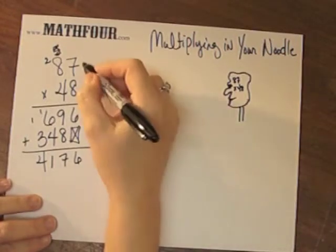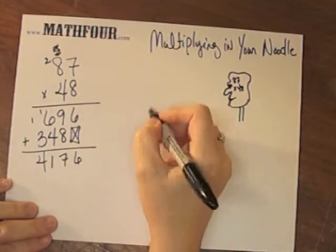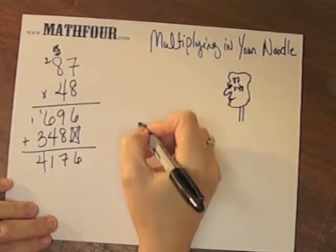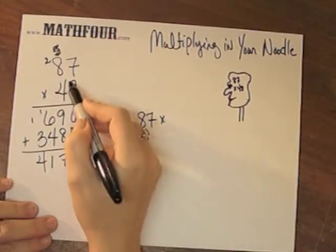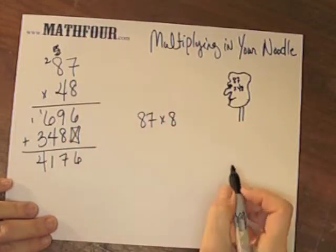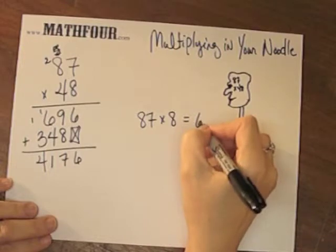So what we did here is actually we multiplied 87 times 8, right? That's what 696 is.